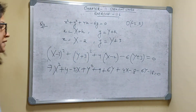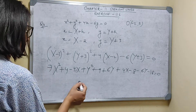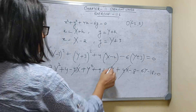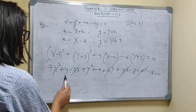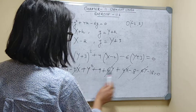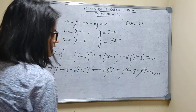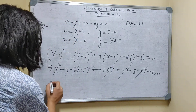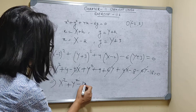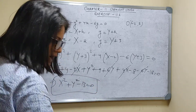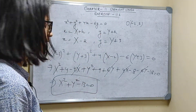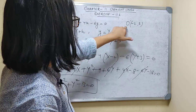Simplifying: the -4X and +4X cancel, the +6Y and -6Y cancel, leaving X² + Y² + 4 + 9 - 8 - 18 = 0, which is X² + Y² - 13 = 0. This is the required transformed equation.